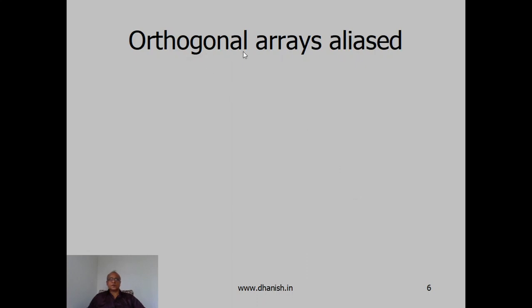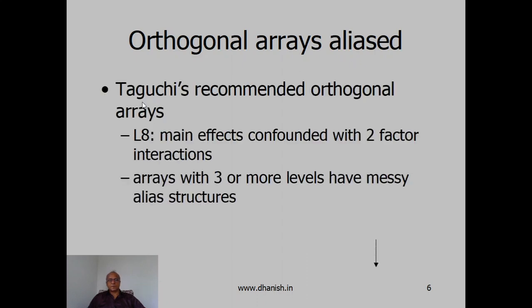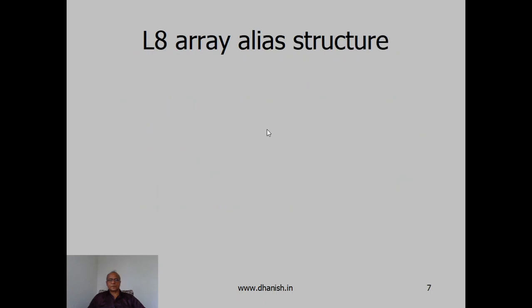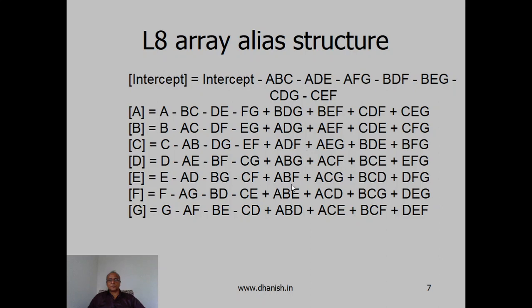Secondly, the orthogonal arrays recommended by Taguchi are aliased. For example, in the L8 array, the main effects are confounded with two-factor interactions. And in arrays with three or more levels, they have highly messy alias structures. For example, the L8 array alias structure can be obtained using software like Design Expert or from books and we can see that A is aliased with BC or DE or FG.